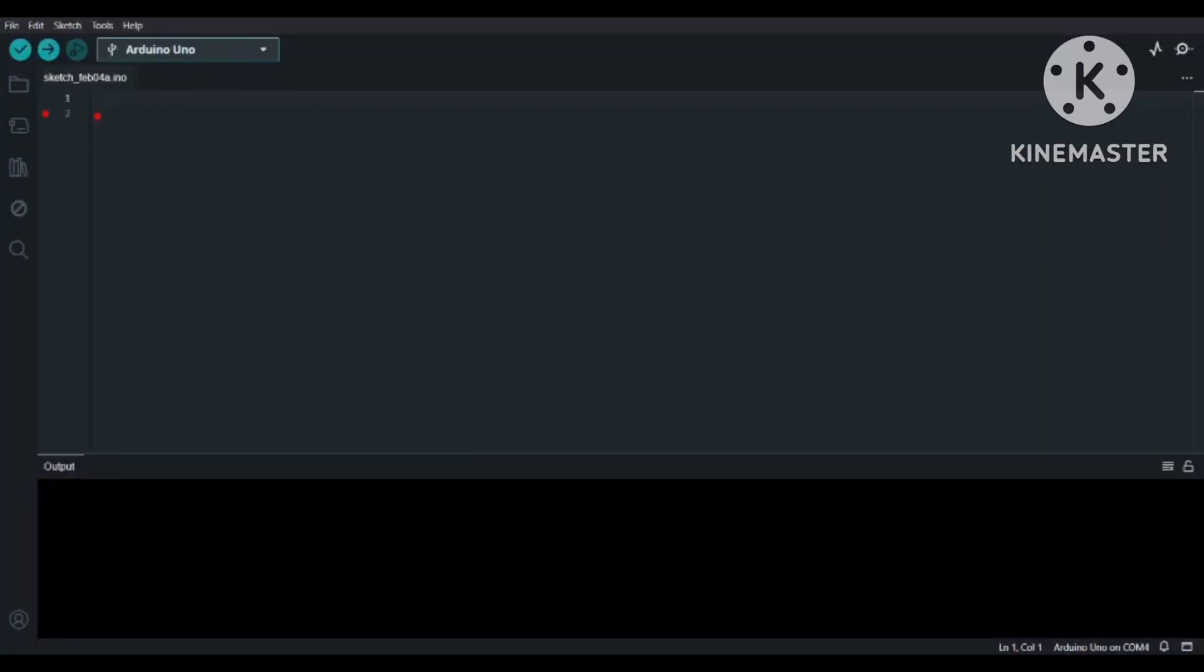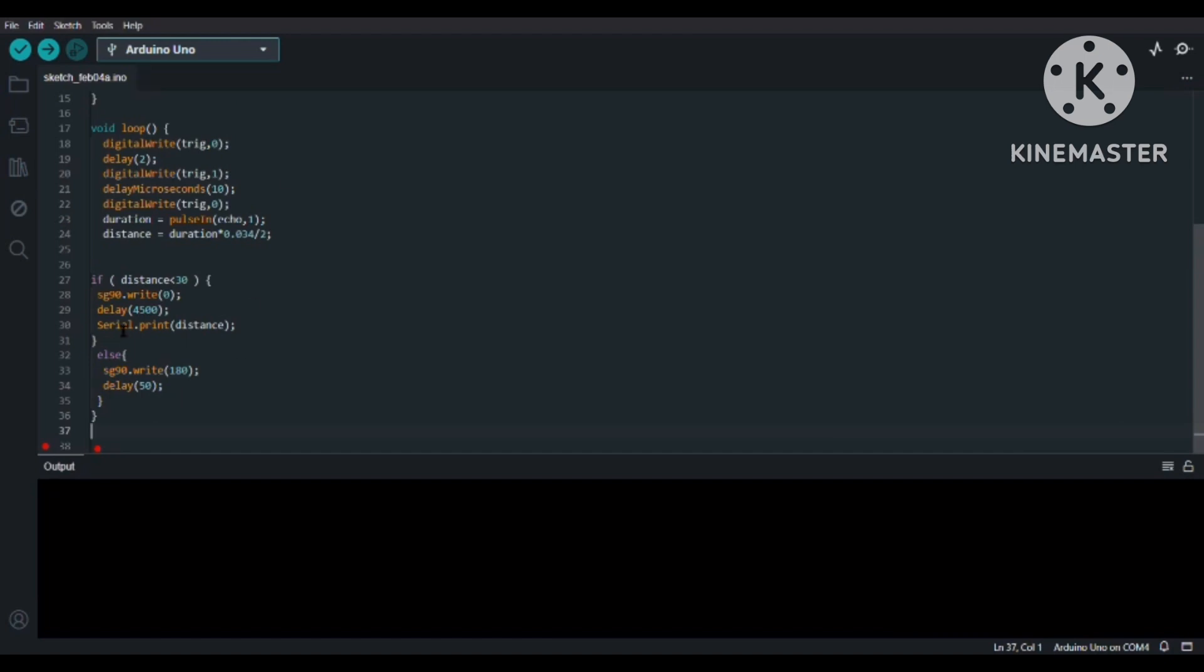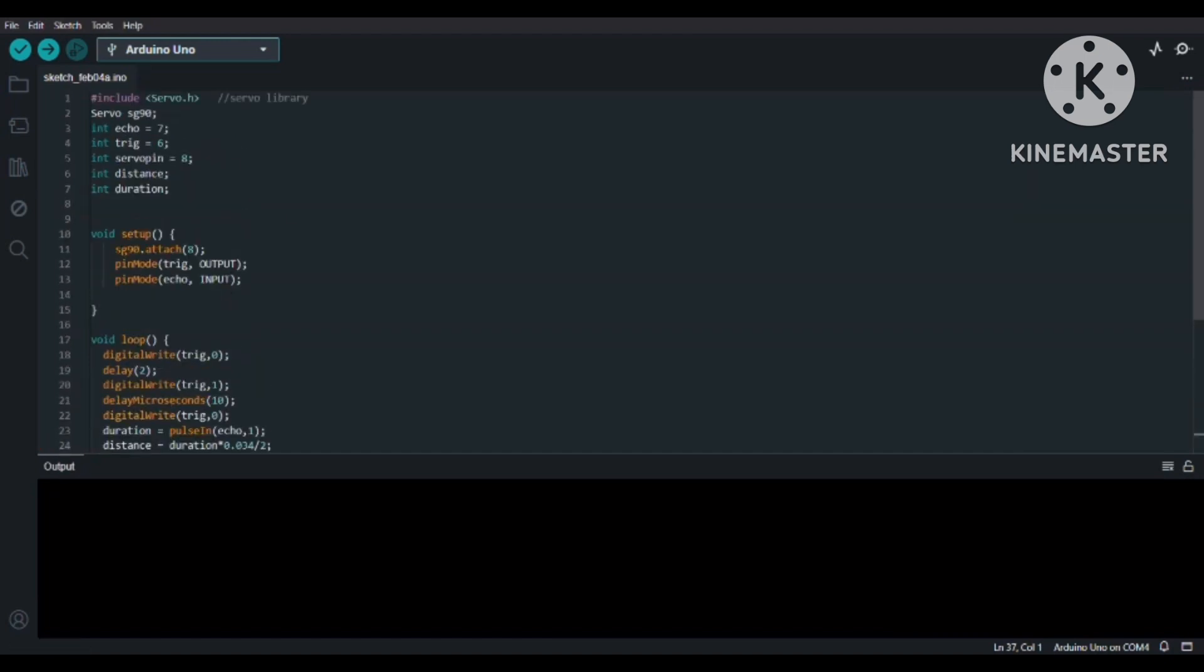After you have done the setup, the next step is to upload the code. First, take the Arduino cable and connect it to the Arduino board, then connect it to your laptop. Paste the code you copied from the description box and upload it using this upload button.